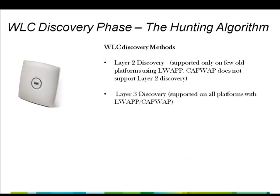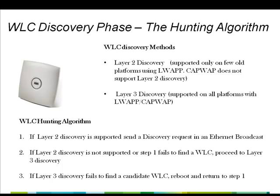The hunting algorithm supports two types of controller discovery: Layer 2 Discovery and Layer 3 Discovery. Layer 2 Discovery is supported only on a few of the older platforms of controllers and access points using LWAP. CAPWAP does not support Layer 2 Discovery. Layer 3 Discovery is supported on all platforms either with LWAP or CAPWAP. If Layer 2 Discovery is supported, the access point sends a discovery request in an Ethernet broadcast. If the AP does not find any controller using this method, or if Layer 2 Discovery is not supported, the AP proceeds to Layer 3 Discovery. And if the AP does not find controllers using Layer 3 Discovery, it reboots and starts all over again.